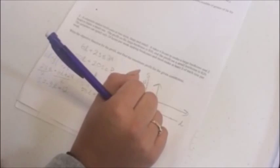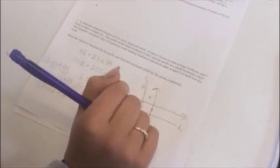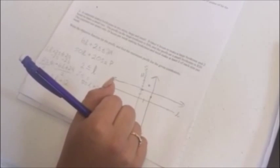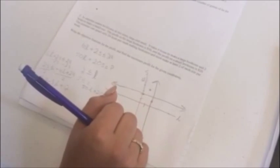A carpenter makes bookcases in two sizes, large and small. It takes six hours to make a large bookcase and two hours to make a small one. The profit on the large bookcase is $50 and the profit on a small bookcase is $20.